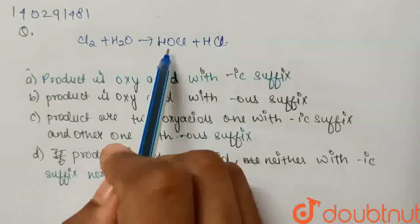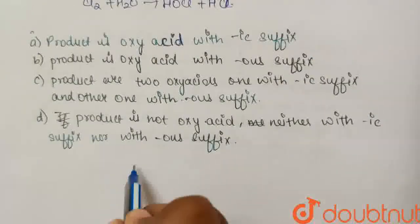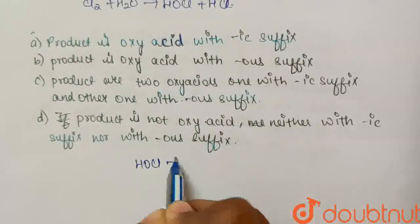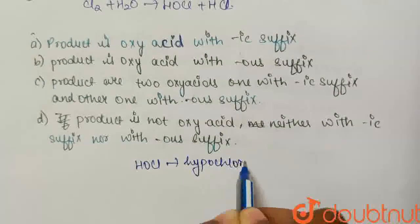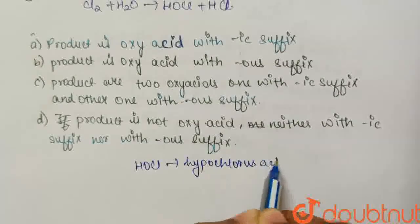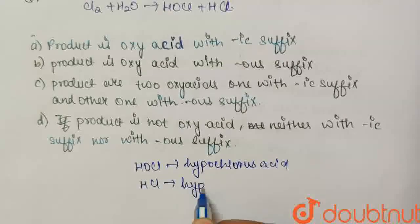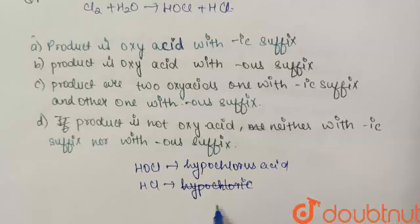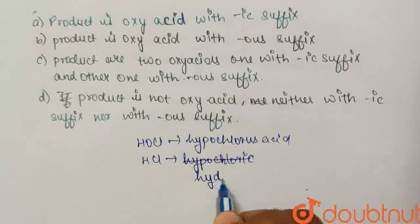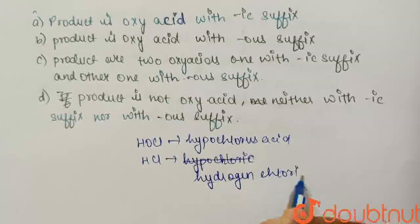Okay, so we know HOCl is hypochlorous acid. And HCl is hydrogen chloride. So these two acids are formed in this reaction.